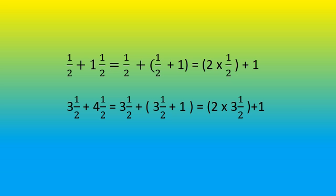Look at the first line: half plus 1 and half. That is 1 by 2 plus 1 and 1 by 2. Now 1 and 1 by 2 is 1 plus 1 by 2, therefore this can be written as 1 by 2 plus 1 by 2 plus 1. Here there are two 1 by 2's adding, so these two can be written as 2 into 1 by 2 plus 1.